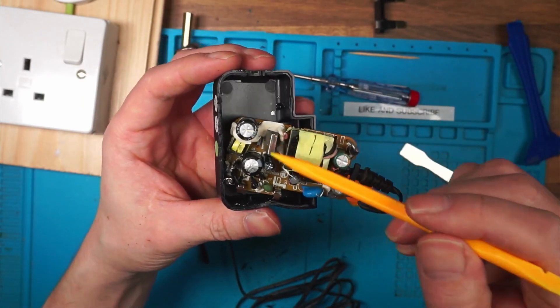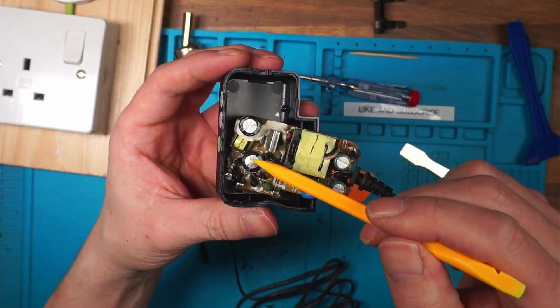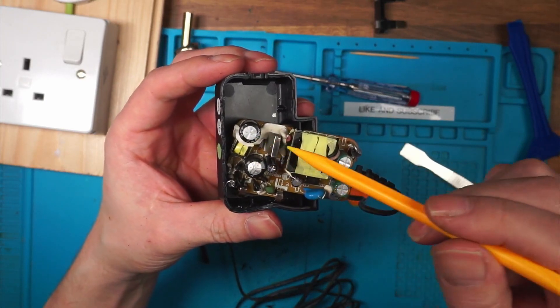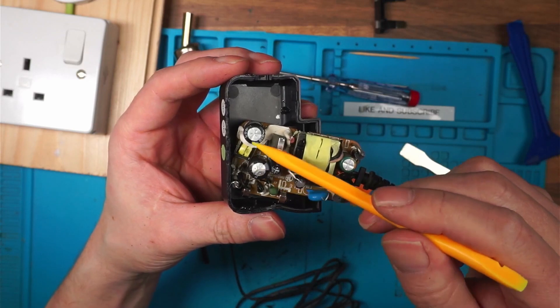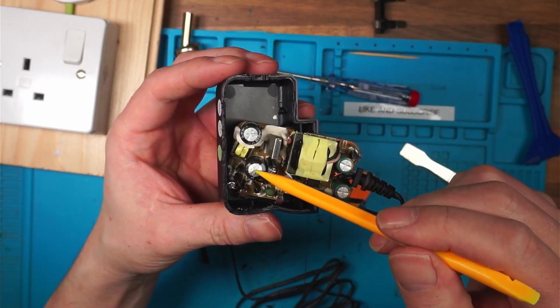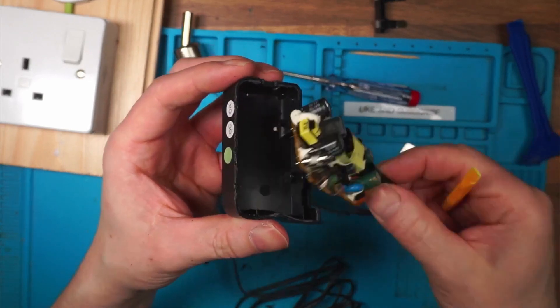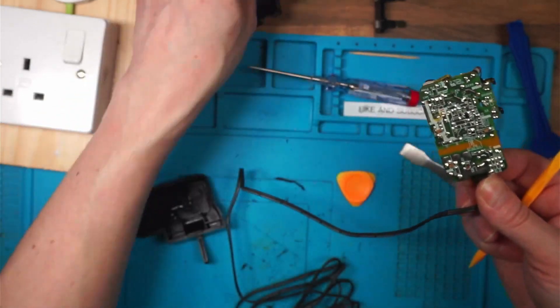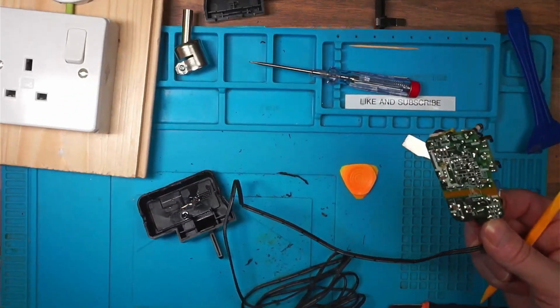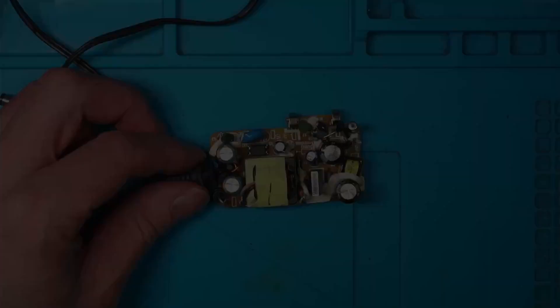I wonder why it's got two, normally you just get one. Let's check the voltages on these capacitors, and we'll have a bit of a tidy up. Let's go underneath the microscope.